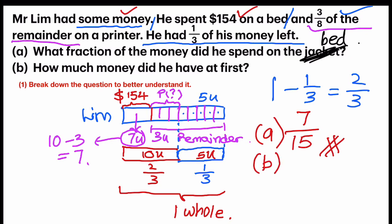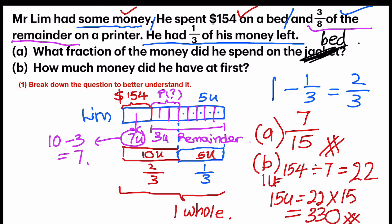Now let's look at B. How much money did he have at first? By looking at the model again, I know that 7 units is equal to $154. So first step, $154 divided by 7. Why? I want to find out 1 unit. So $154 divided by 7 equals $22. Now second step, what do I do next? He had at first, right? So at first, back to my model, there are 15 units in all. 15 units. So I know that 1 unit is $22. 15 units would be $22 times 15, and you will have an answer of $330. And that's my answer. Thank you.